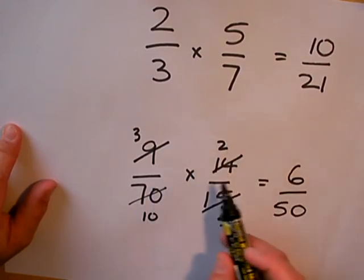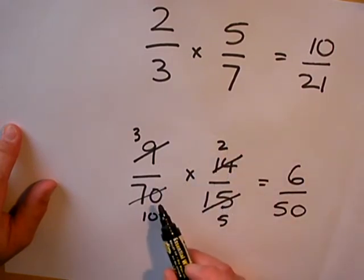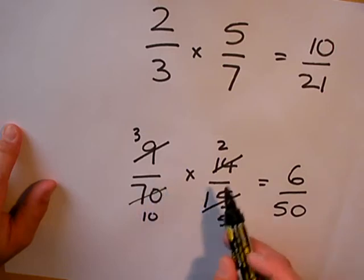So when multiplying fractions, multiply the top numbers, multiply the bottom numbers, but if you can see any canceling that can go on beforehand, try and do that before you multiply the numbers together.